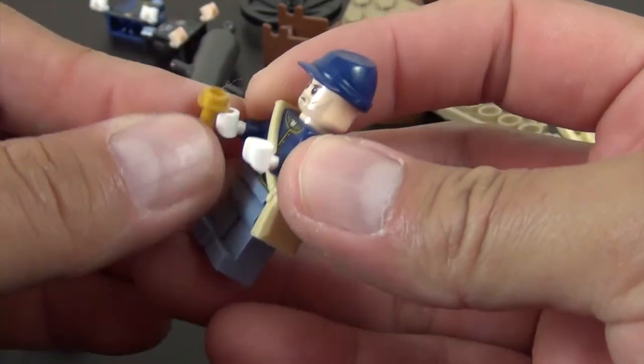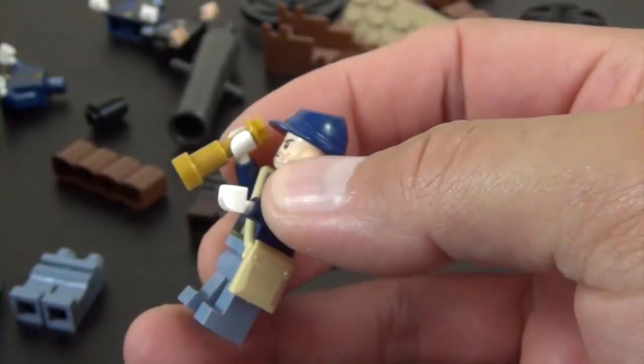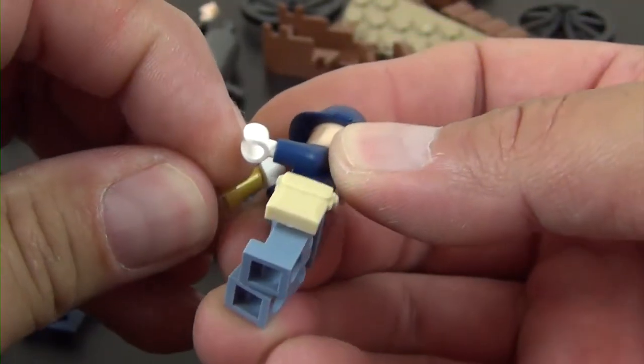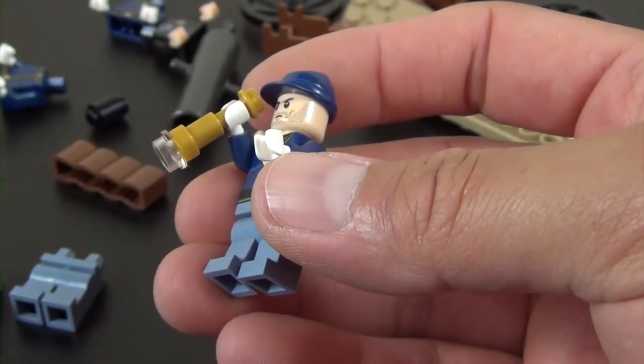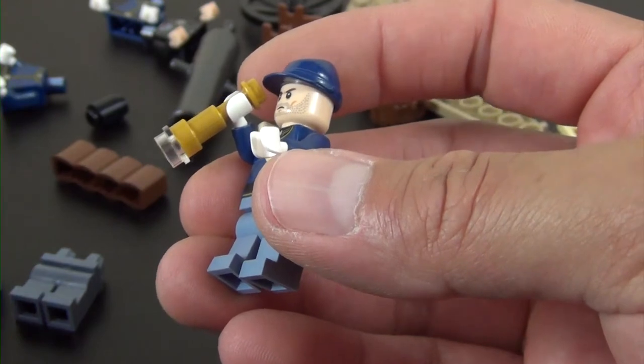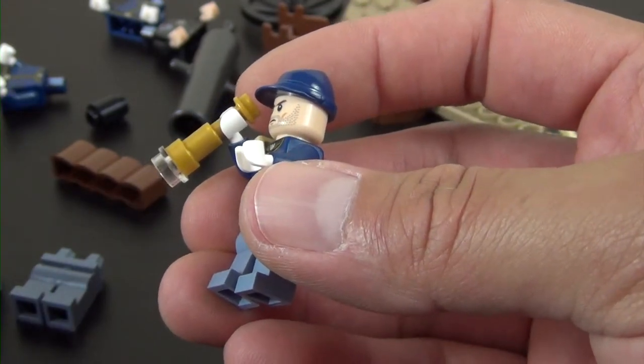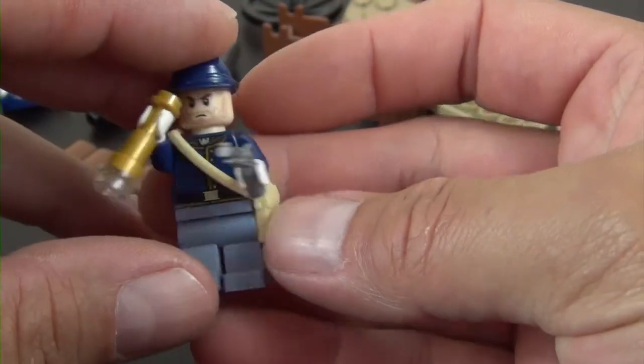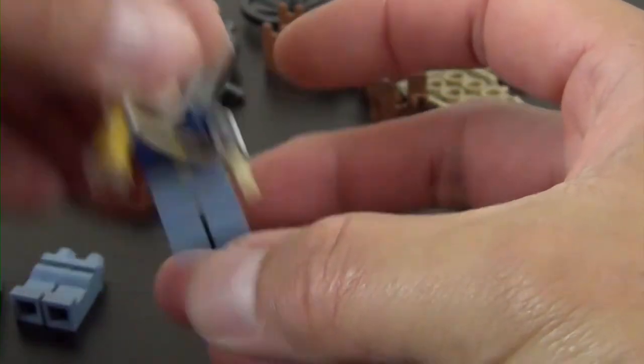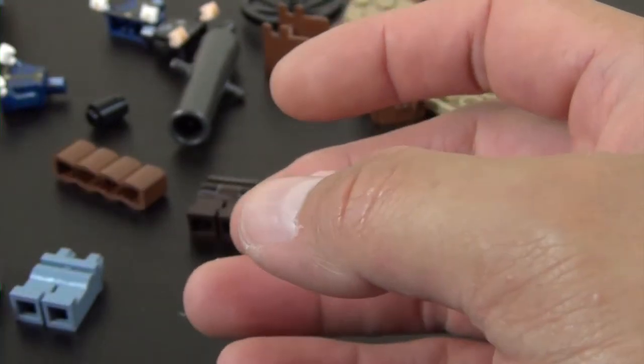Okay, so this guy has one of the cavalry hats, a little telescope piece and a clear stud, and then he has the little revolver gun. All right, so that's our first cavalry minifigure.